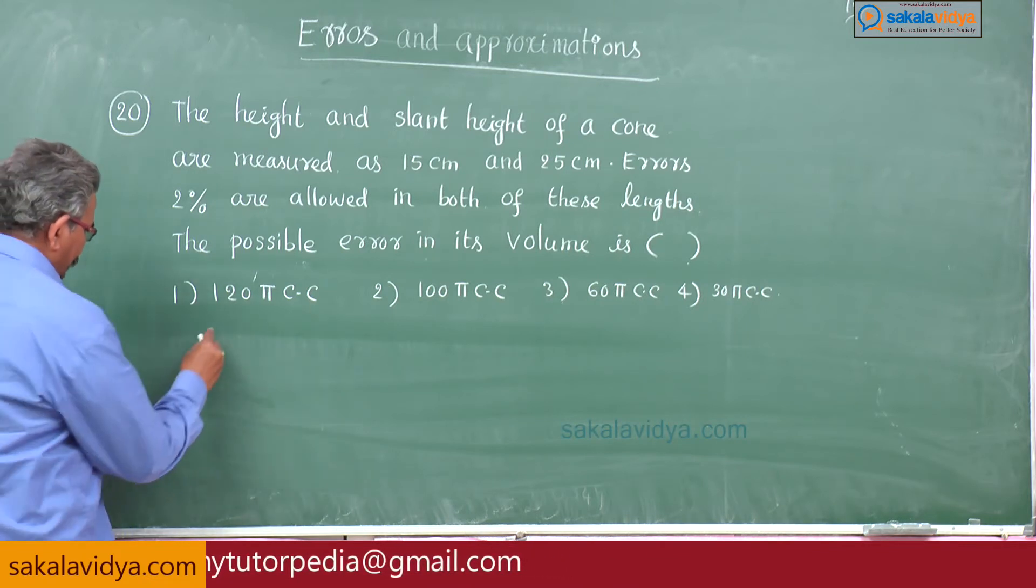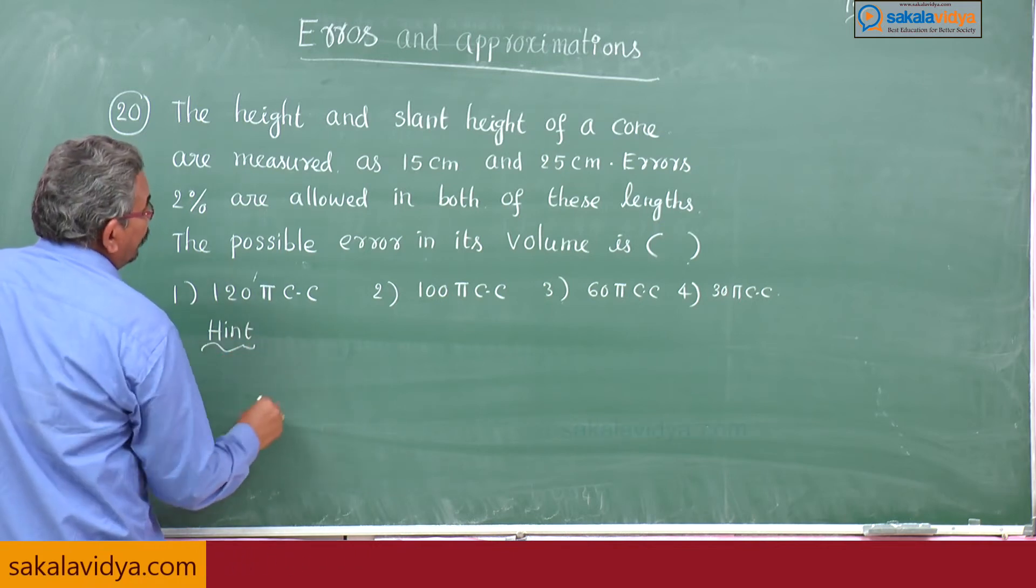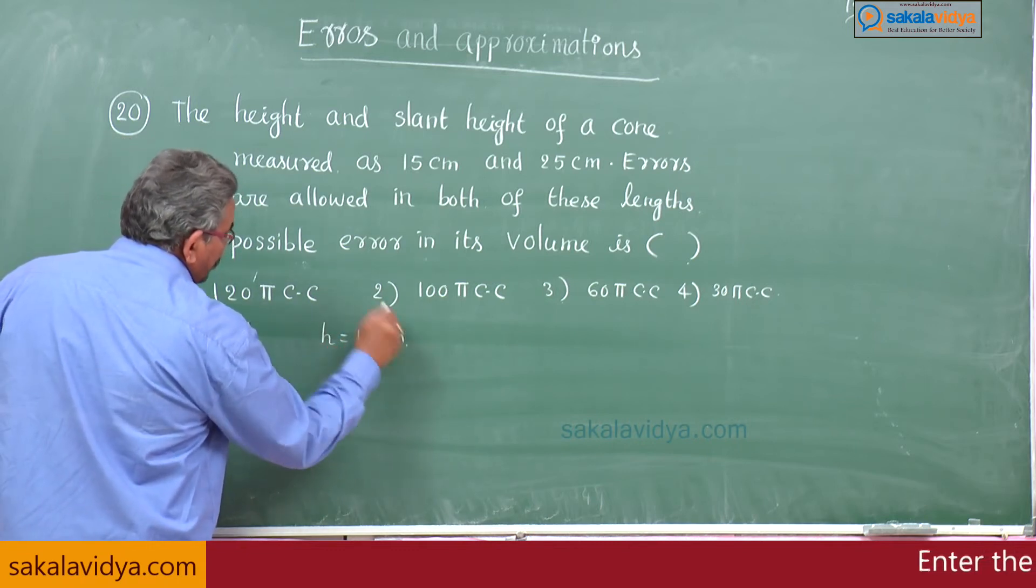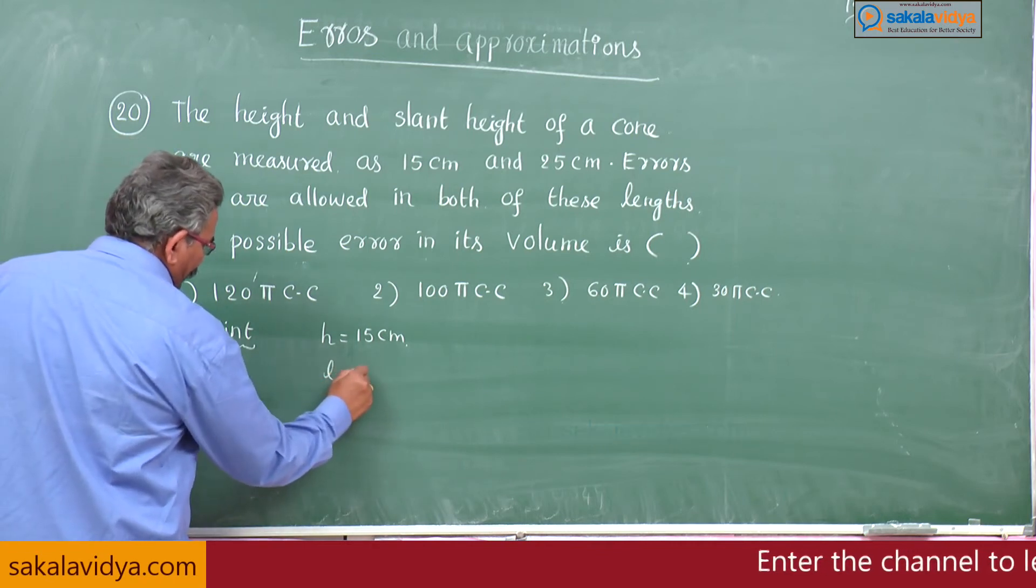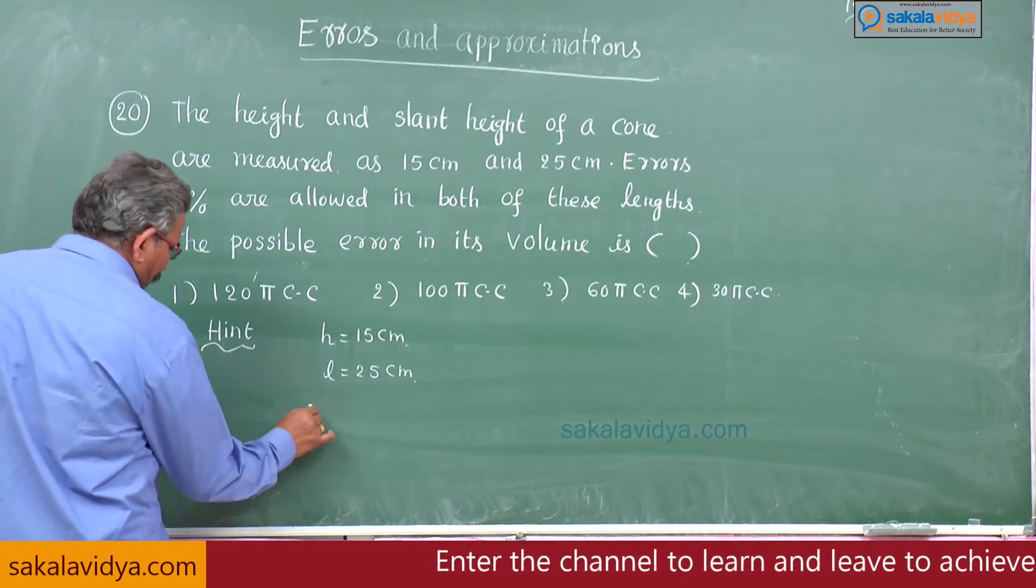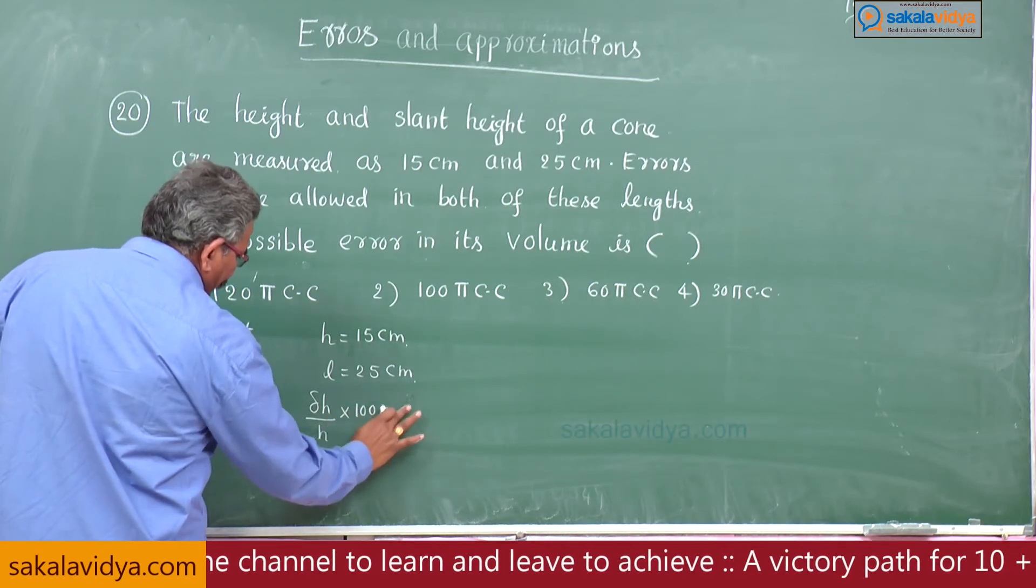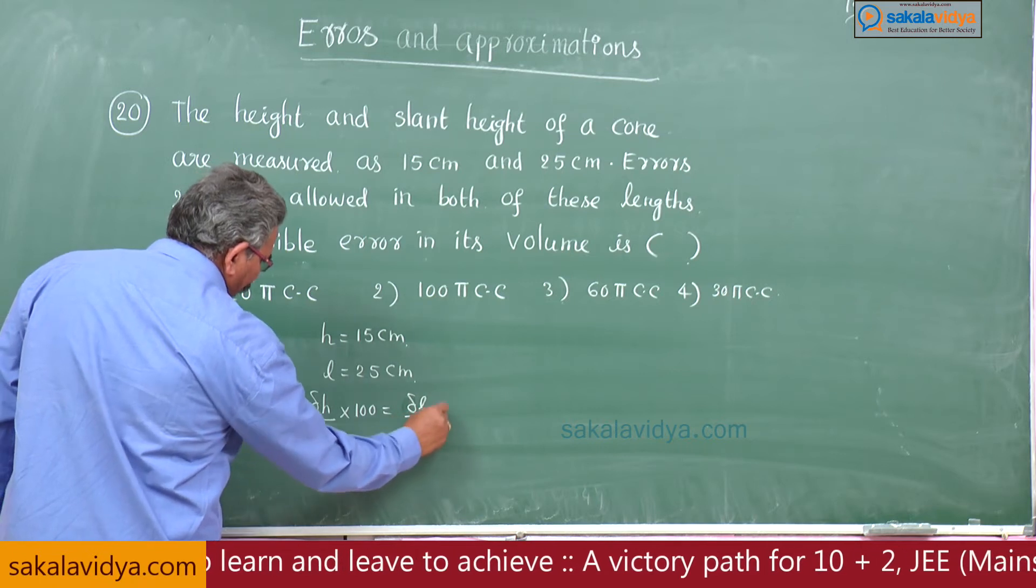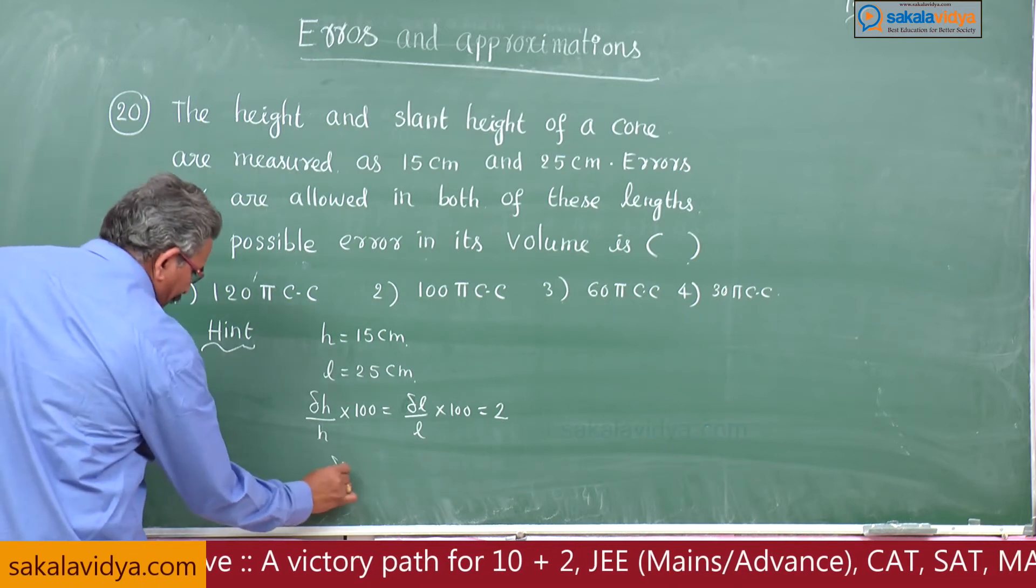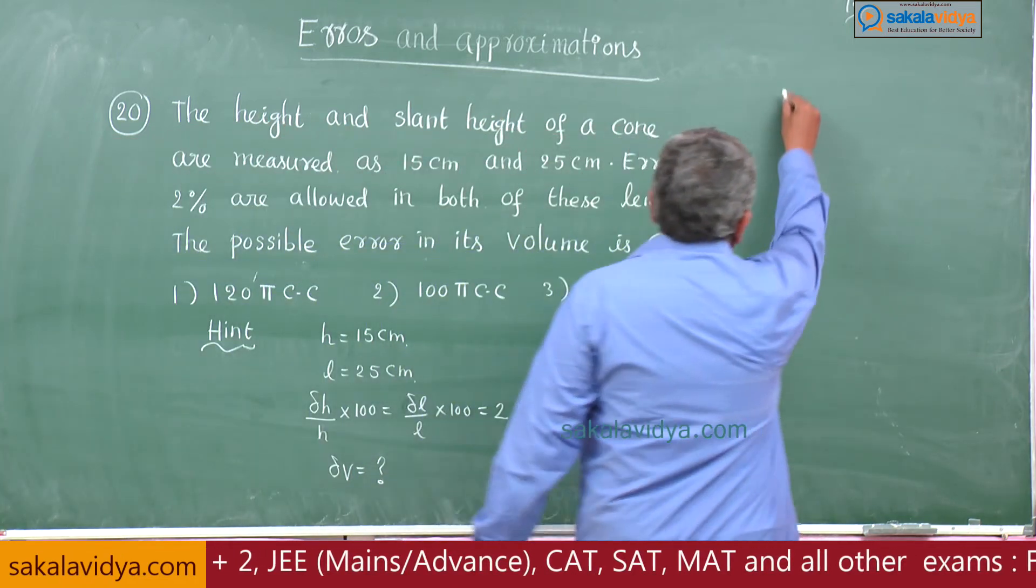And possible error we have to find out, delta v. First let us write this problem is related to the cone, where h equals 15 centimeters, l equals 25 centimeters. Next, delta h by h into 100, delta l by l into 100 equals 2 given, and possible error delta v equals question mark.